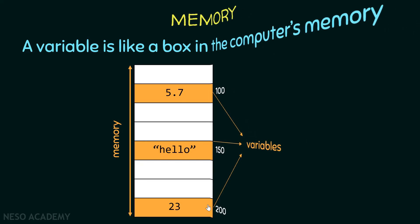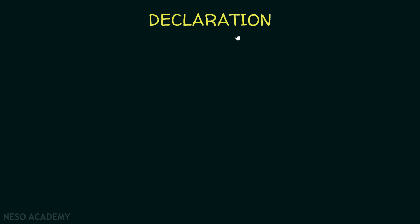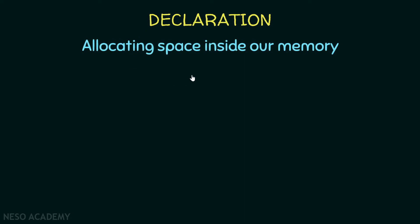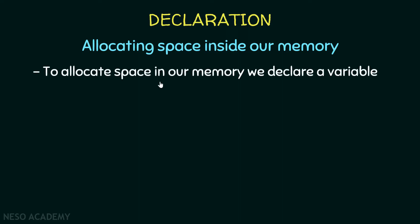Now let's talk about declaration. What is declaration? It is basically allocating some space inside our memory. To store some data in the memory, we have to reserve some space, and this is called allocation. So declaration is allocating some space in the memory — to do that, we declare a variable.